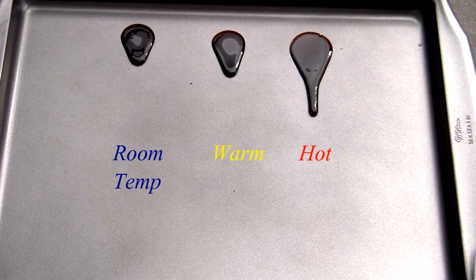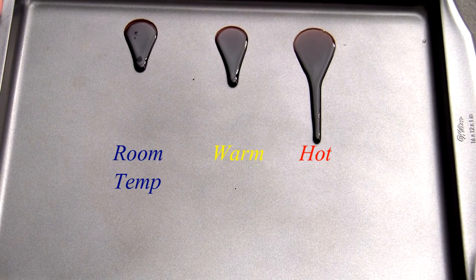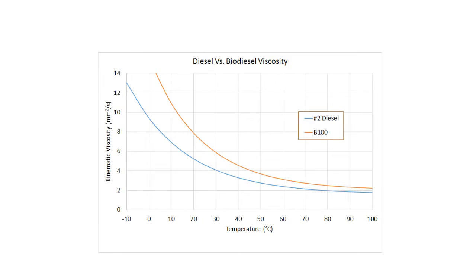Temperature and feedstocks used for biodiesel affect kinematic viscosity. The kinematic viscosity value of biodiesel and diesel decreases with an increase in temperature. Petroleum diesel and biodiesel have similar rates when comparing kinematic viscosity to temperature.